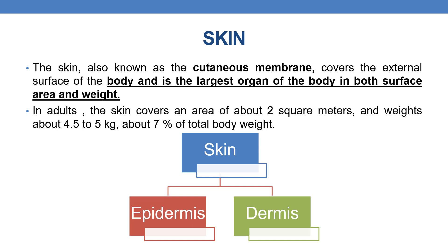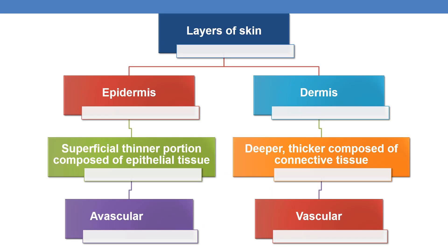The two main layers of the skin are the epidermis and dermis. The epidermis is the superficial, thinner portion composed of epithelial tissue and is avascular. The dermis is the deeper, thicker portion composed of connective tissue and is vascular.